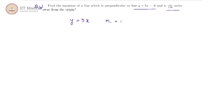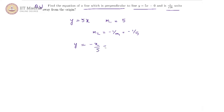Therefore, the slope m1 is 5, and if our line is perpendicular to it, then m2 must be minus 1 by m1, which equals minus 1 by 5. So we know our line is y equals minus x by 5 plus some constant, and if we simplify, we get 5y plus x equals c.